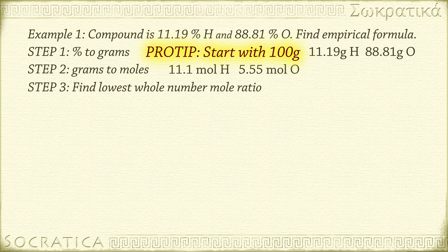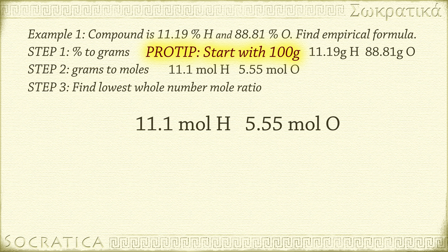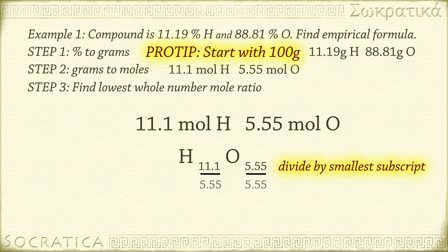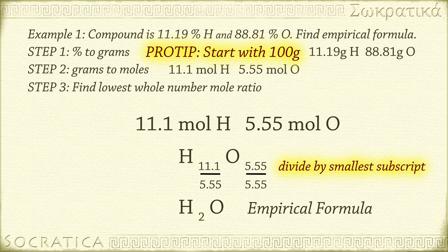Step 3: find the lowest whole number mole ratio. Right now the ratio is 11.1 moles of hydrogen for every 5.55 moles of oxygen. We write it as H₁₁.₁O₅.₅₅. Divide all subscripts by the smallest value, 5.55 — this way the smaller number becomes 1. We get H₂O₁. A subscript of 1 is understood, so the empirical formula is H₂O. Water.